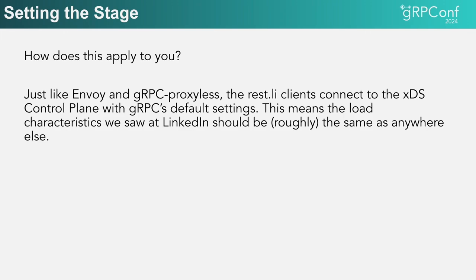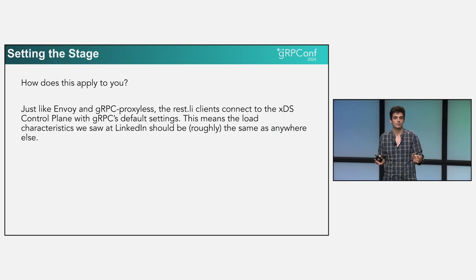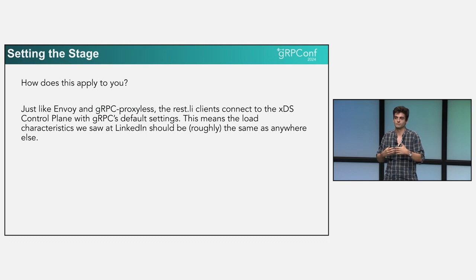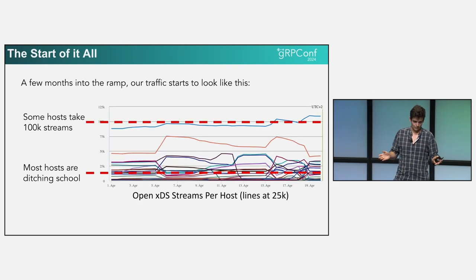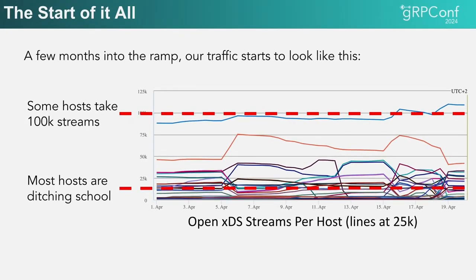How does this talk apply to you? The RESTly clients and the gRPC and Envoy clients are all using the same settings when opening the XDS stream to the control plane, so we can effectively treat all of those clients as behaving the same. This becomes the abstract problem of scaling out the XDS control plane for any large company — and everything should be applicable to all of you. We start rolling it out with default settings and see some pretty weird traffic distribution: some hosts taking 10 times the traffic of the average, which is really high load.